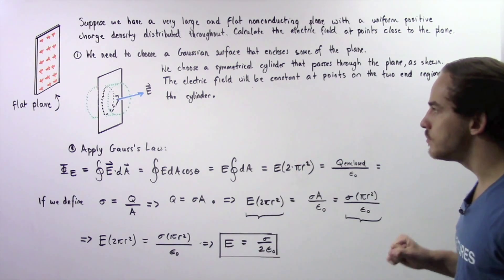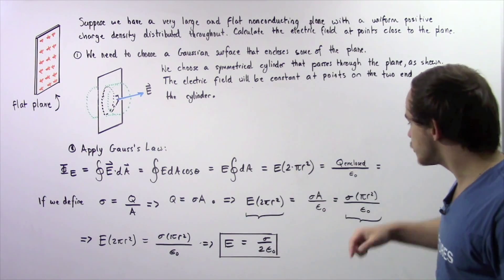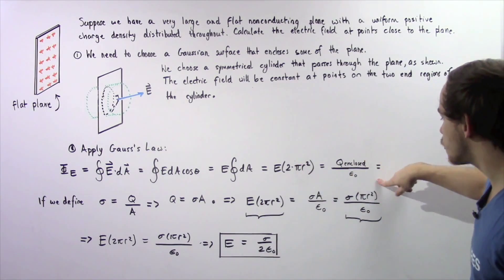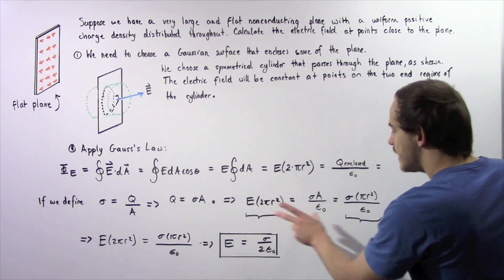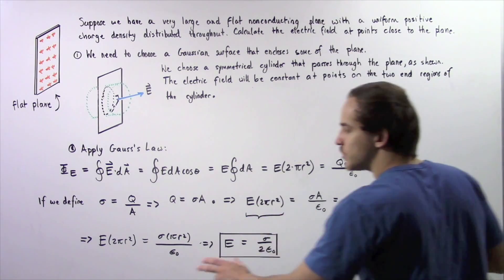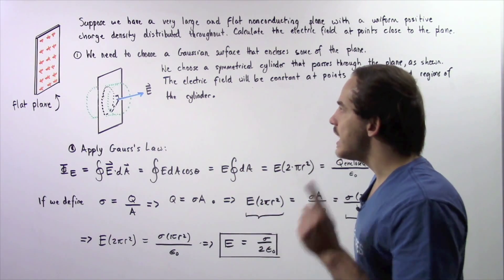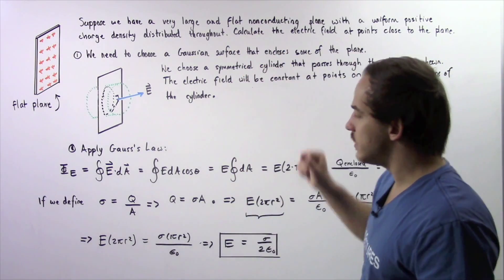Notice A is simply pi r squared. We replace A with pi r squared and we get this is equal to this and we rewrite that in the following way. We have to solve for the electric field.